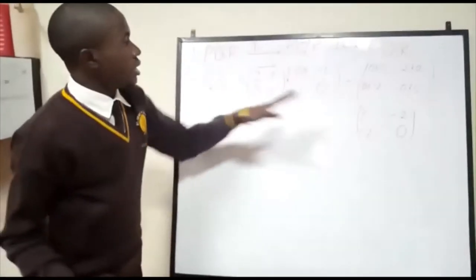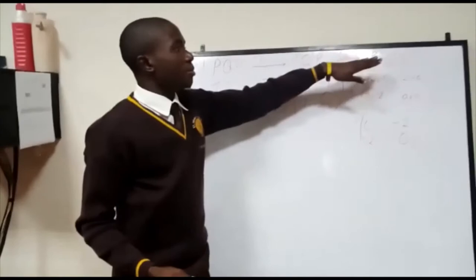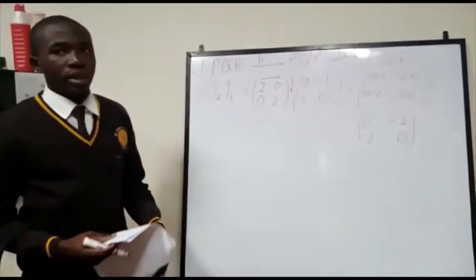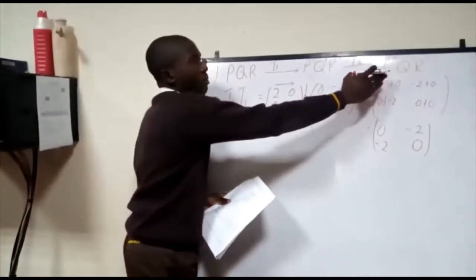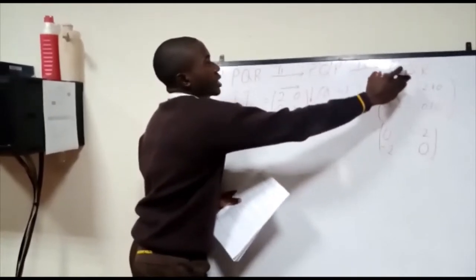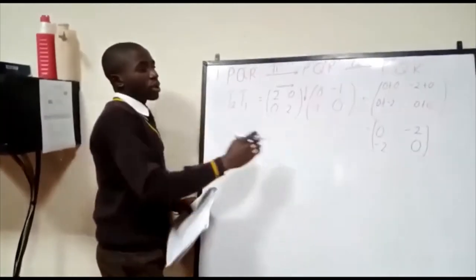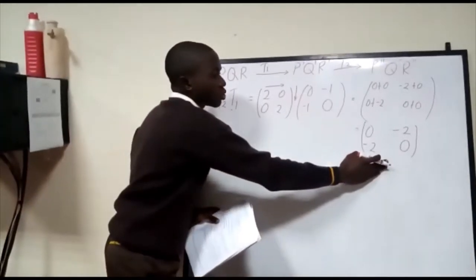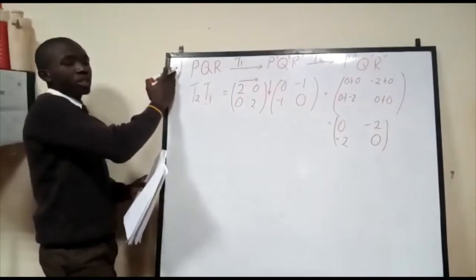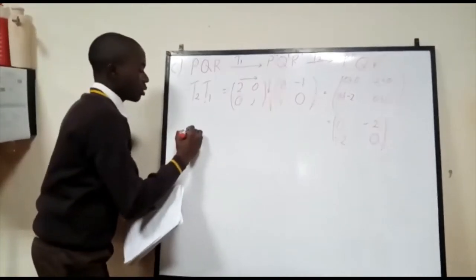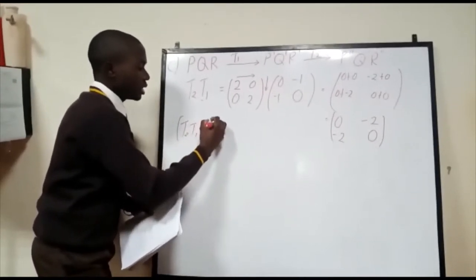This matrix [0, −2; −2, 0] maps PQR to P double prime, Q double prime, R double prime. But the question requires the matrix that maps P double prime, Q double prime, R double prime back to the original triangle, so we need to find the inverse of this matrix.